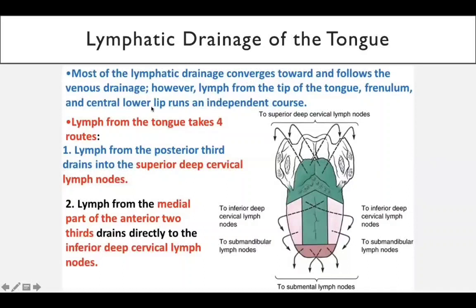Lymphatic drainage of the tongue converts to and follows the venous drainage, similar to most parts of the body. The lymphatic drainage is almost accompanied with the venous drainage. However, lymph from the tip of the tongue, apex, frenulum, ventral surface, and central lower lip runs an independent course. Other than that, it is the same as the venous drainage.